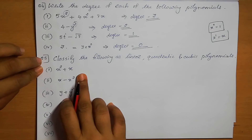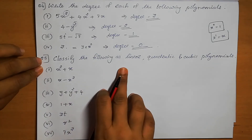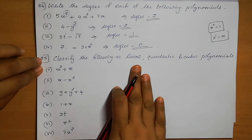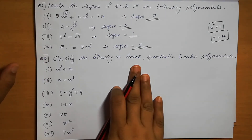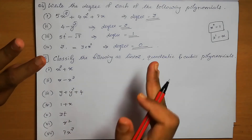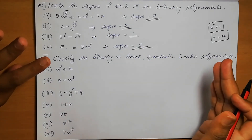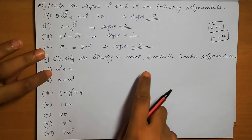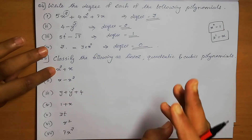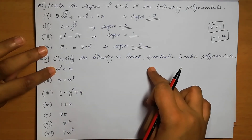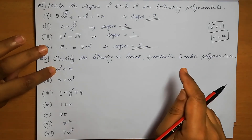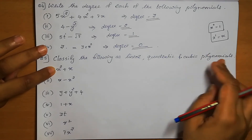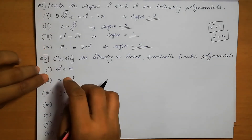Question number 5: Classify the following as linear, quadratic, and cubic polynomials. Polynomials can be classified in two ways — based on their terms (monomial, binomial, trinomial) and based on their degree. A polynomial with degree 1 is linear, degree 2 is quadratic, and degree 3 is cubic.